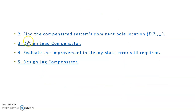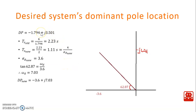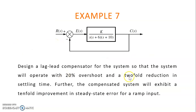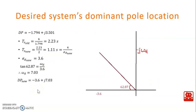The next part is to find the compensated system dominant pole. We design the lead compensator, evaluate the improvement in steady state error, and design the lag compensator. From the uncompensated system dominant pole, we determine the settling time as 4 divided by sigma_d. Based on the design requirement of a 2-fold reduction in settling time, we divide the old settling time by 2 to get the new settling time.